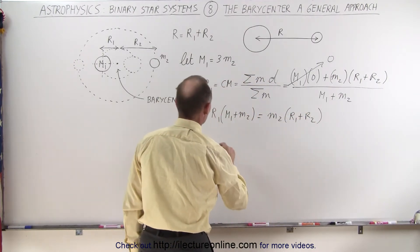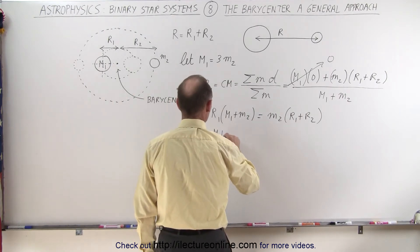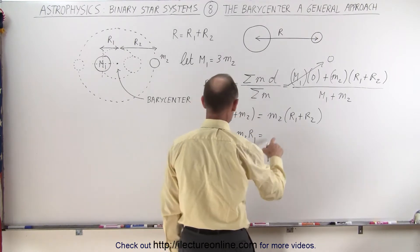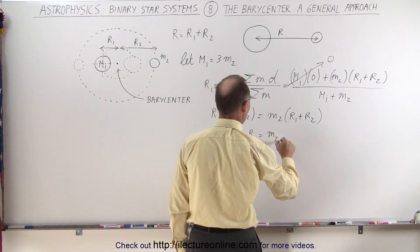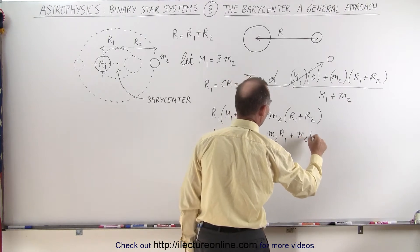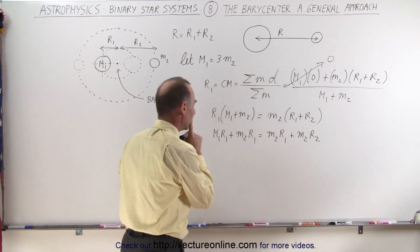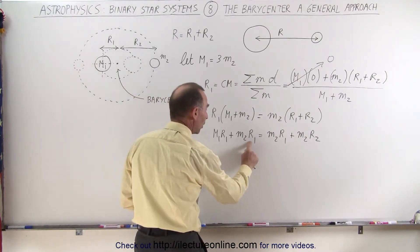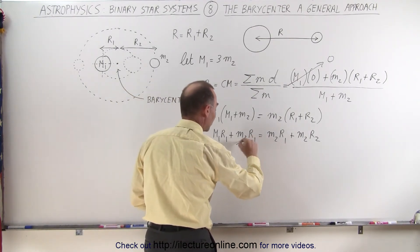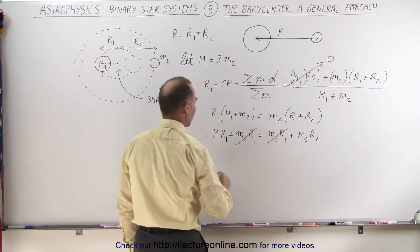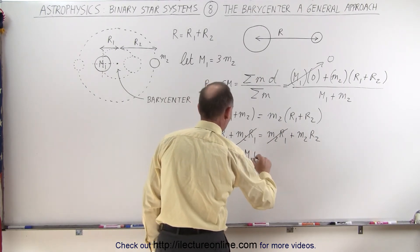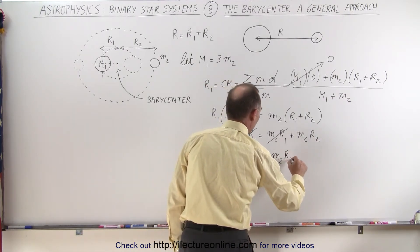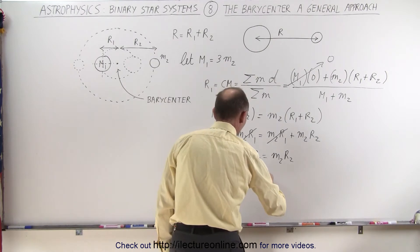When we multiply this out, we get M1·R1 plus M2·R1 equals M2·R1 plus M2·R2. Notice on both sides of the equation we have M2·R1, so that cancels out, which means M1·R1 equals M2·R2.